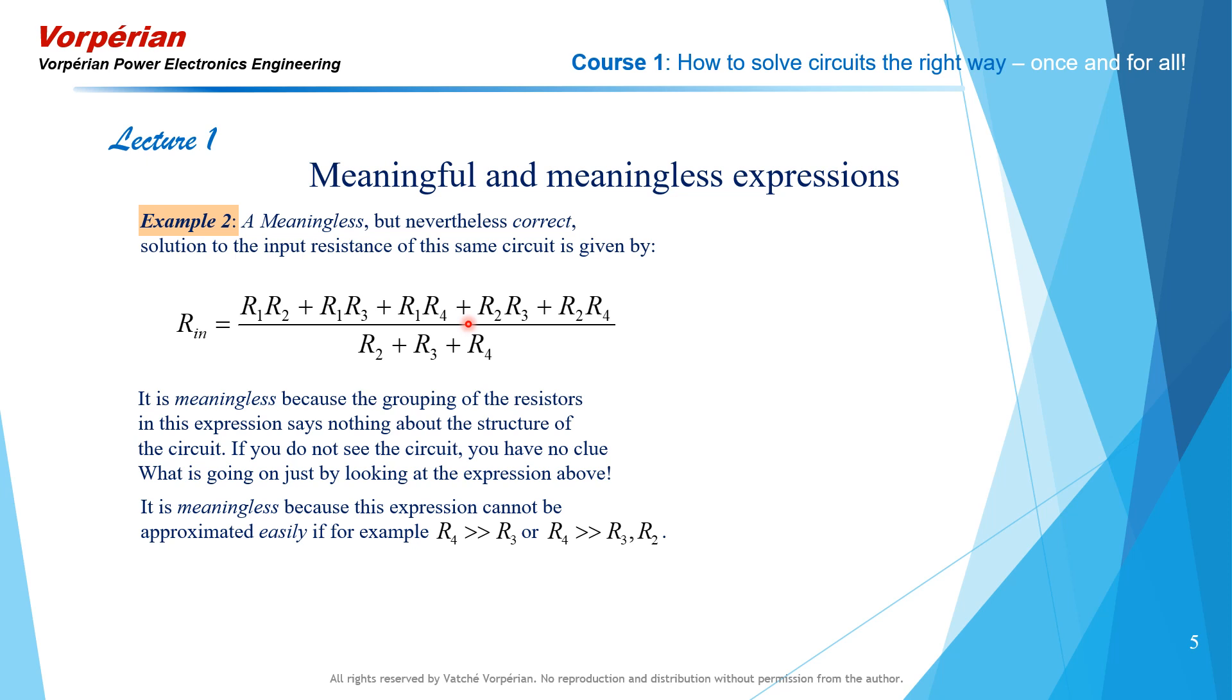It is also meaningless because this expression cannot be approximated easily or readily. For example, if R4 is much larger than R3, or R4 is much larger than R3 and R2. If you want to approximate this expression with these inequalities, you're going to have to do some work to reduce this expression to its approximate form. When the expression is meaningful rather than meaningless like this, it approximates readily, as we will show you in the next two slides. This meaningless answer is the result of painful circuit analysis, which is the only kind of circuit analysis that you have studied, or you are studying right now, and worse, you are teaching it to some undergraduate.